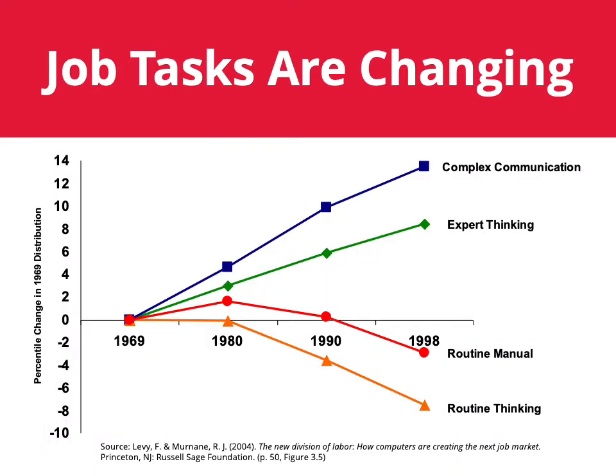Another way to see this are the types of tasks necessary to perform modern work. Complex communication and expert thinking are overarching constants, while routine efforts, such as manual or thinking exercises, are becoming less utilized for modern types of work.